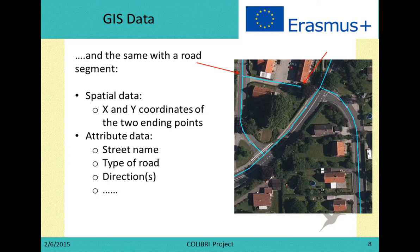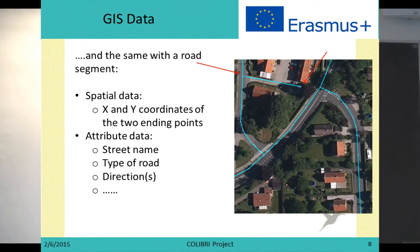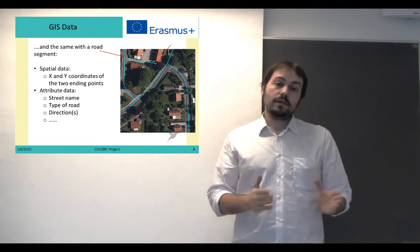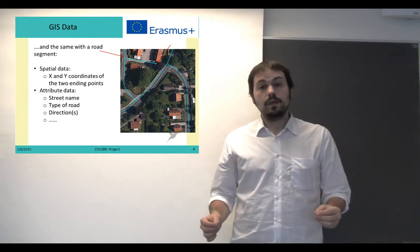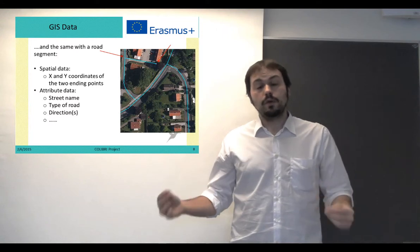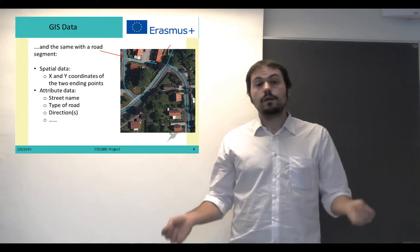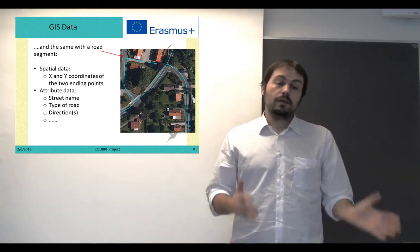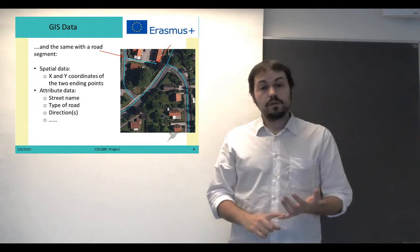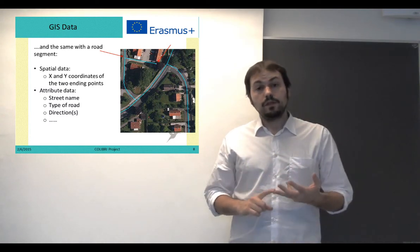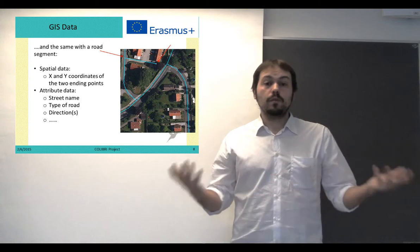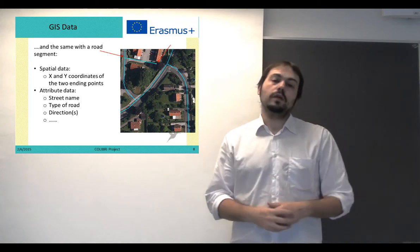Another example of GIS data could be streets or roads. Of course, we will have spatial data — the coordinates of the two ending points of the segment — but also attribute data, which could include the name of the street, the direction the traffic is following, and the type of road we are talking about.